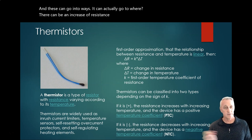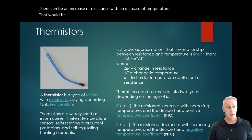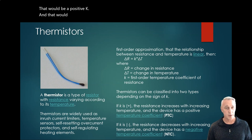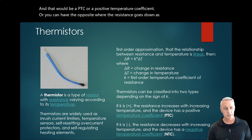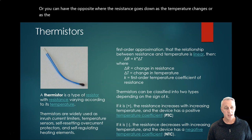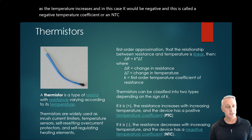That would be a positive K, and that would be a PTC or positive temperature coefficient. Or you can have the opposite where the resistance goes down as the temperature increases. In this case K would be negative, and this is called a negative temperature coefficient or NTC type. So you can do either one of those types.